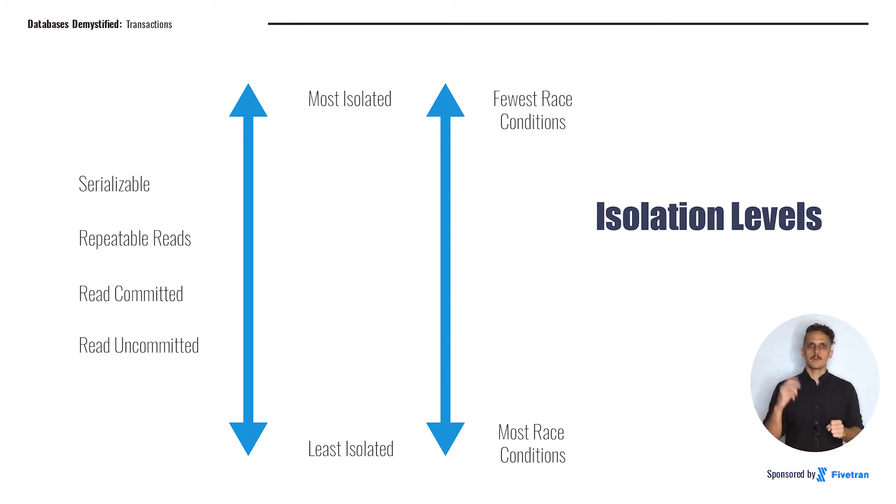In descending order of isolation, we have serializable, repeatable reads, read committed, and read uncommitted. Read uncommitted is the least isolated and therefore has the highest likelihood of generating those bug-causing race conditions. We're not going to cover the nuances of exactly how these isolation levels differ from each other. If you're interested, the Wikipedia article on isolation has a really nice breakdown. The key concepts to know are that one, different isolation levels exist. Two, they go from most strict to least strict. And three, many databases offer the option to choose which isolation level you want.